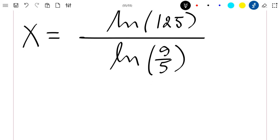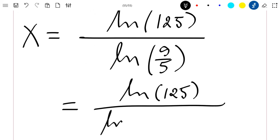You can still write this result as ln of 125 divided by ln of 9 minus ln of 5.